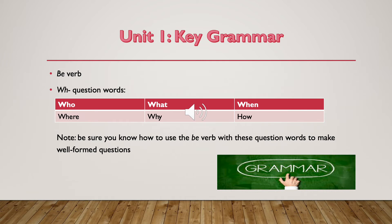The other important grammar focus for this unit is question words — the WH words: who, what, when, where, why, and how. Because this is an introduction unit, you're going to be asking each other questions to find out information about each other, so you'll need to know how to use these questions plus the be verb together to ask well-formed questions. For example: where are you from? Where is his office? What do you do for a living? Or what is your job? Practice those and that will help you.